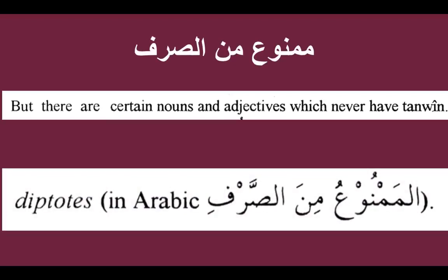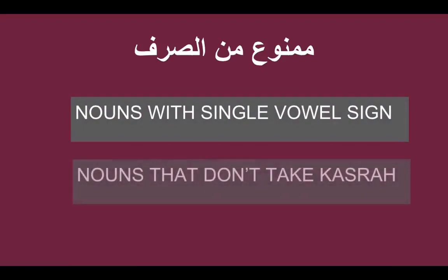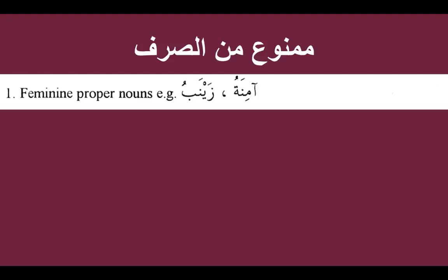There are however nouns which can never have tanween. In the natural state they have only one dhamma. These are called diptotes, or in Arabic Al-Mamnu'amina Sarf. These nouns take only a single dhamma sign. Also, these nouns don't take kasra in the majroor form — that is another speciality. So in this lesson inshAllah we will be doing the marfu forms. In this book we have learnt about eight patterns of Mamnu'amina Sarf, and we are going to summarize everything.